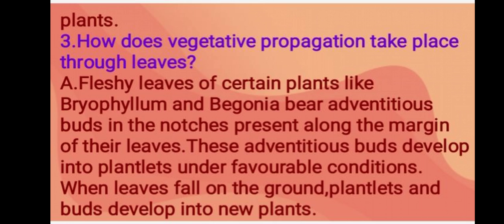Next question: how does vegetative propagation take place through leaves? Fleshy leaves of certain plants like Bryophyllum and Begonia bear adventitious buds in the notches present along the margin of their leaves. These adventitious buds develop into plantlets under favorable conditions. When leaves fall to the ground, the plantlets and buds develop into new plants.